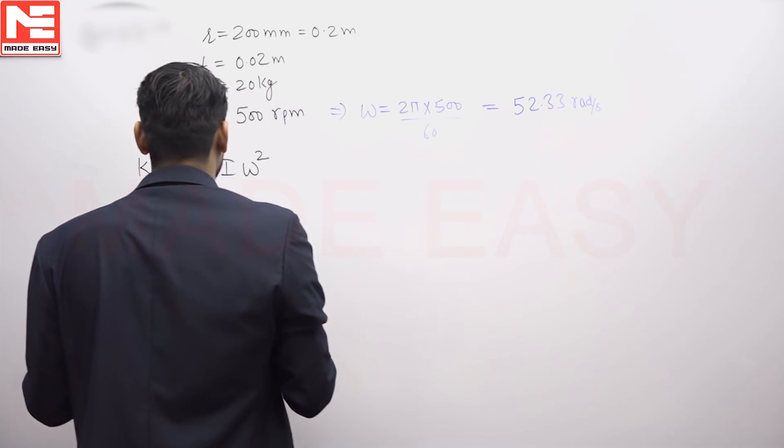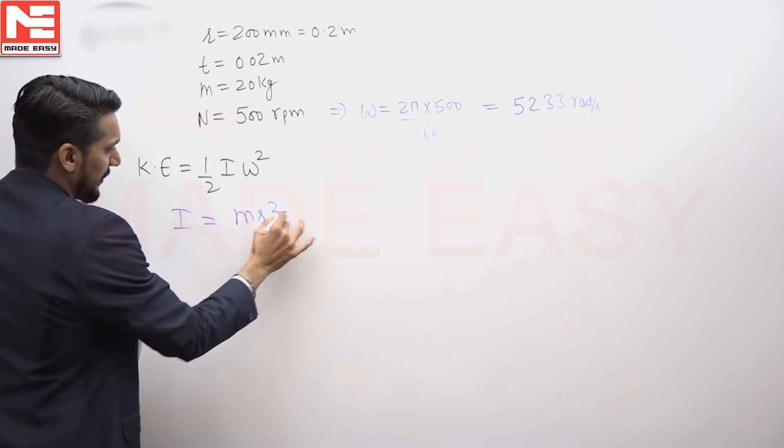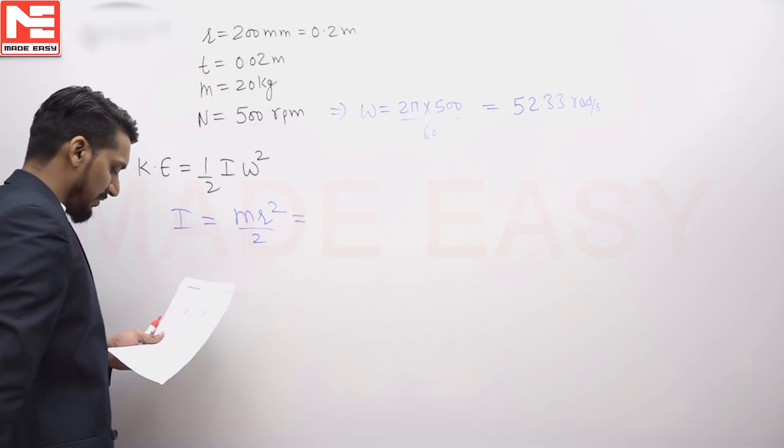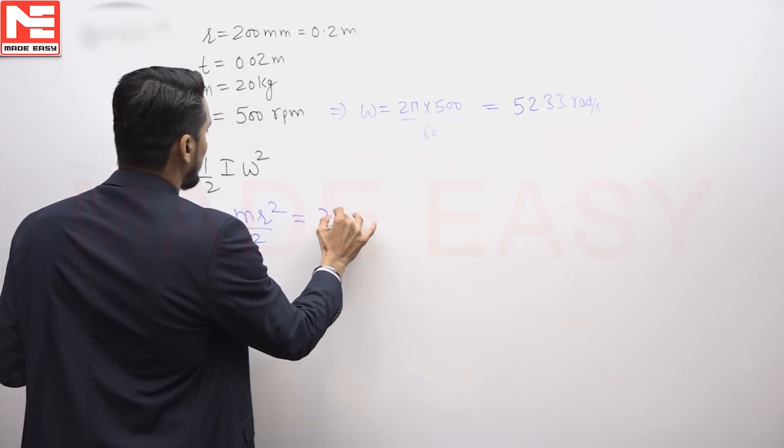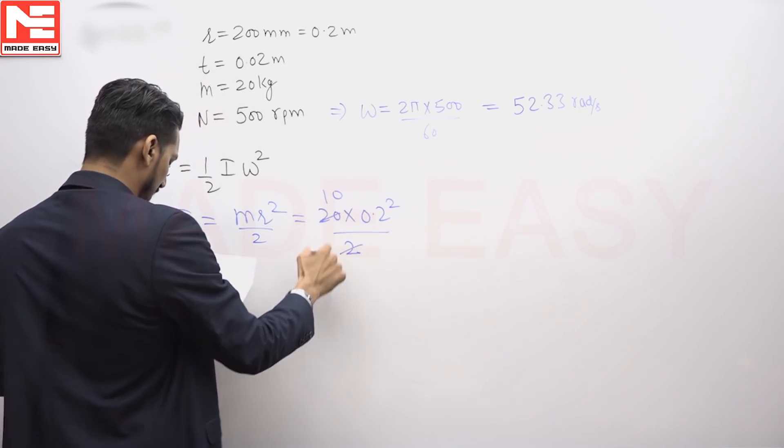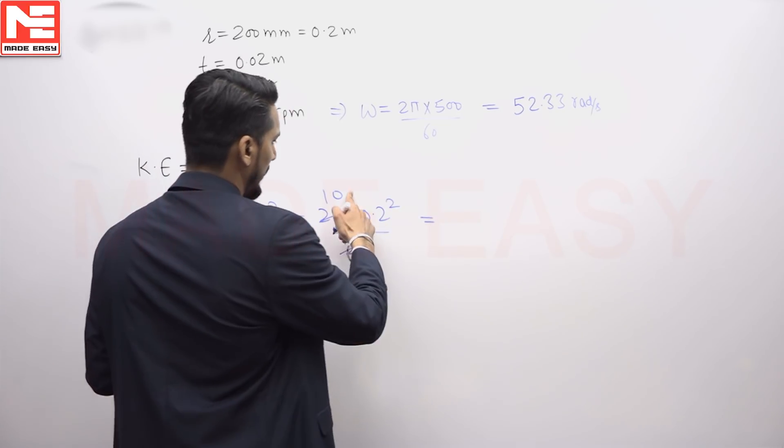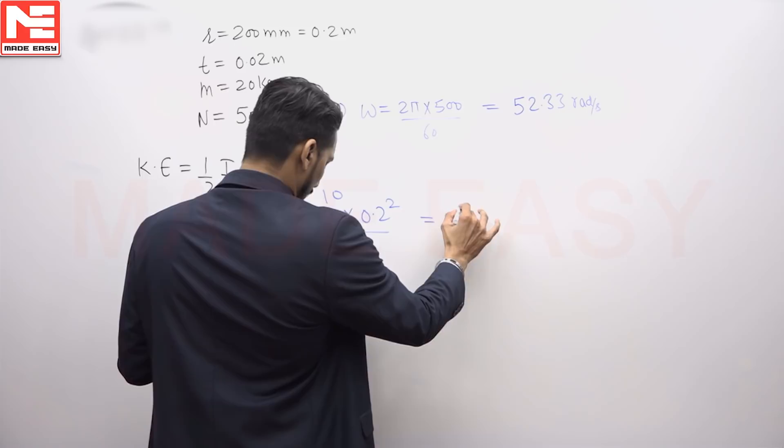Now, how to calculate I? For a disk, I = mr²/2. Mass is 20, r is 0.2, so (20 × 0.2²)/2 equals 0.04 × 10, which is 0.4 kg·m².